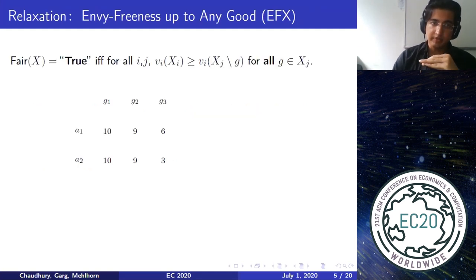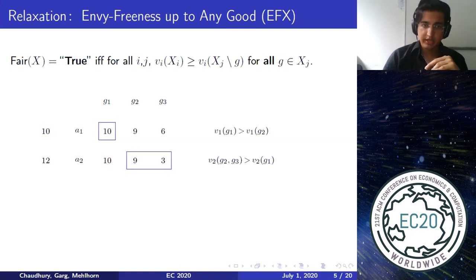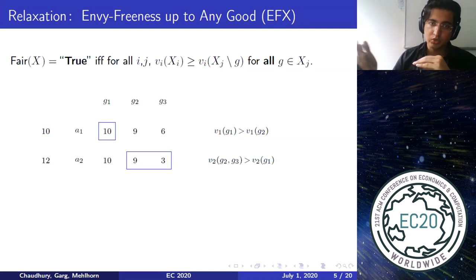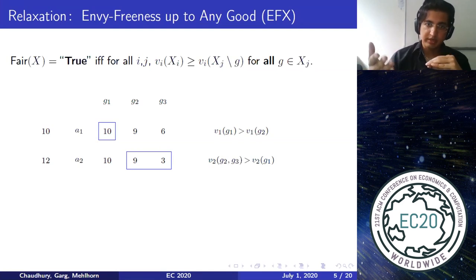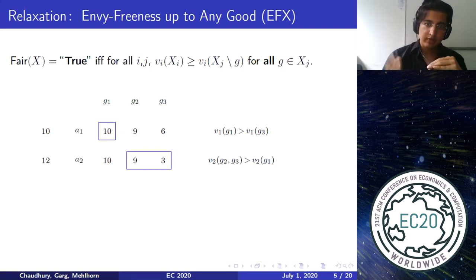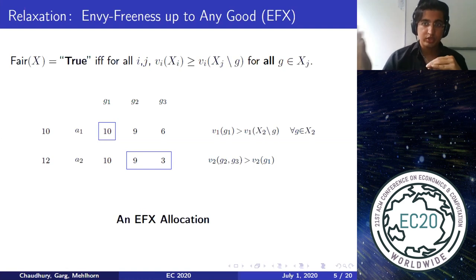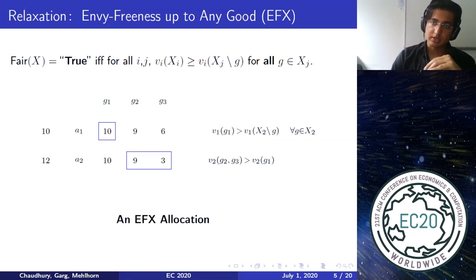Let me give an example. Consider two agents and three goods with the given valuation matrix. Consider the allocation where agent one gets good G1 and agent two gets goods G2 and G3. I claim this is an EFX allocation. Agent two does not envy agent one because V2(G2, G3) = 12 and V2(G1) = 10. Agent one does envy agent two, but V1(G1) is strictly larger than V1(G2) and also strictly larger than V1(G3). So no matter which good is removed from agent two's bundle, the envy disappears. This is an EFX allocation.